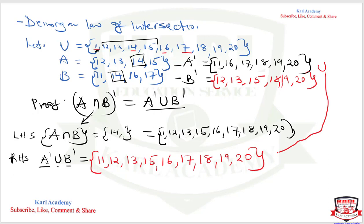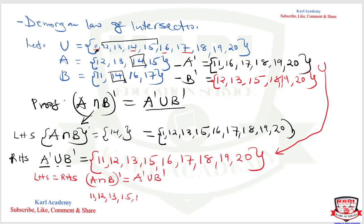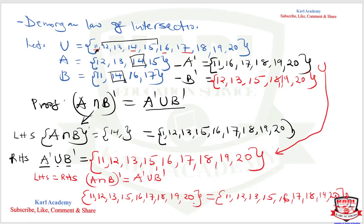This shows that the left-hand side is equivalent to the right-hand side. The complement of A intersection B gives: 11, 12, 13, 15, 16, 17, 18, 19, 20 — and A complement union B complement also gives: 11, 12, 13, 15, 16, 17, 18, 19, 20. Both sides are equal, and we have proven De Morgan's Law of Intersection — the second law of De Morgan's. Thank you.